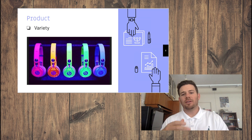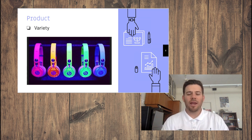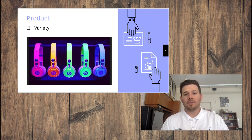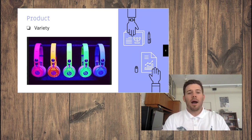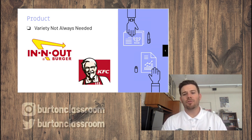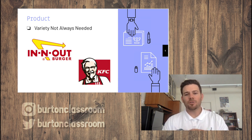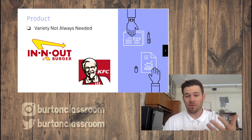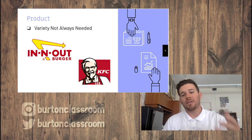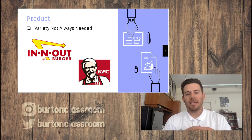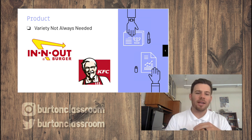Next is variety. Beats by Dre comes in all different colors because not everyone wants black. However, variety is not always needed. Companies like In-N-Out just focus on burgers, shakes, and fries — no chicken, no salad. KFC was known for fried chicken and biscuits. These companies succeeded by focusing on what they do best.